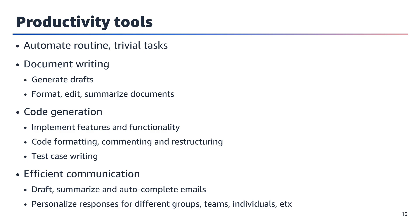For software development, they can implement features and functionality, handle code formatting, commenting, and restructuring, and even assist in writing test cases, ensuring comprehensive coverage. Communication is another area where productivity tools shine. They can draft, summarize, and auto-complete emails, tailoring responses for different groups, teams, individuals, and contexts. This personalization enhances clarity and effectiveness in communication, fostering better collaboration and understanding.